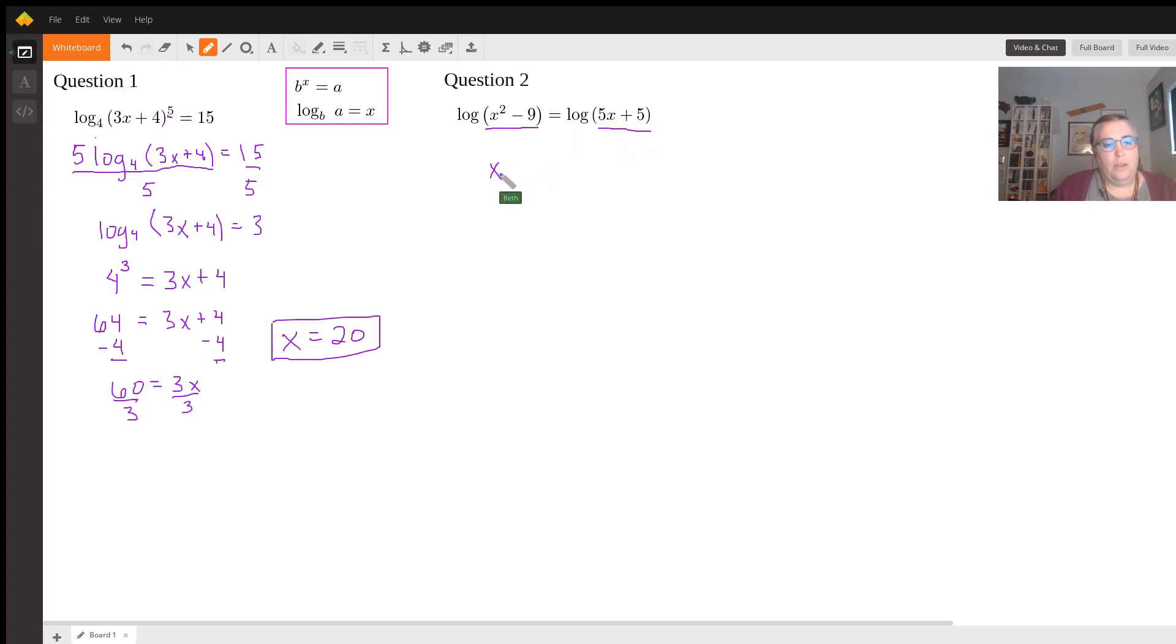This is a quadratic because we have x squared. So we just need to get all terms on the same side and have this equal to 0. So you get x squared minus 5x. They both are negative, so it's going to be adding the numbers equals 0.